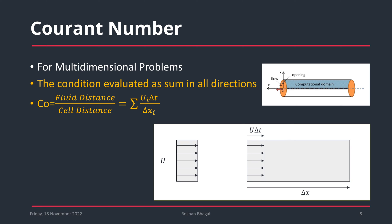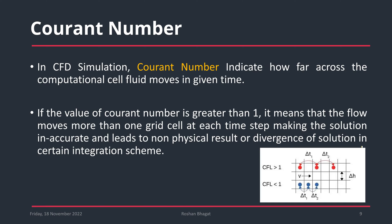For a multi-dimensional problem, the Courant number is expressed as the summation of Ui·ΔT / ΔXi — the velocity in each respective direction divided by the cell distance in that direction. When we have a computational domain, we have nodes and elements, and the distance between two nodes defines the cell distance used in this calculation. In CFD simulation, the Courant number indicates how far across a cell the fluid moves in a given time step.